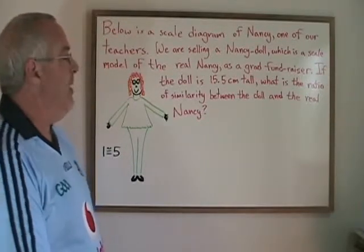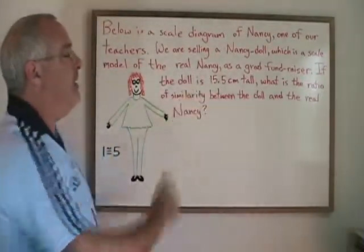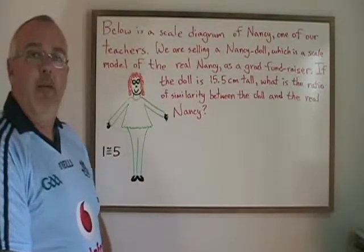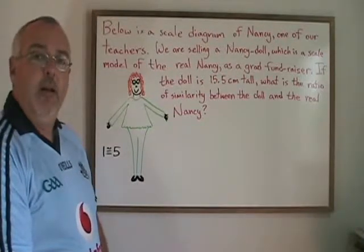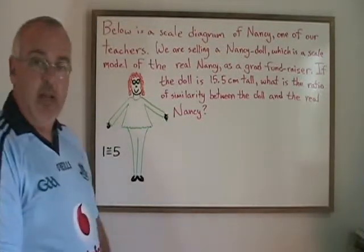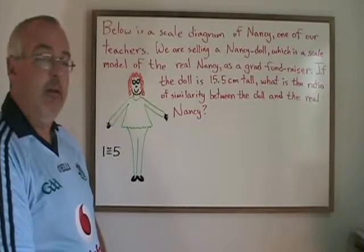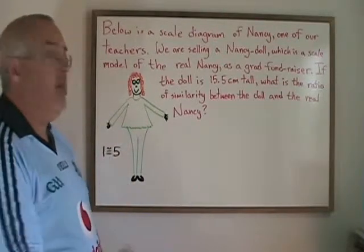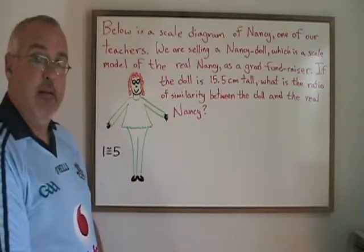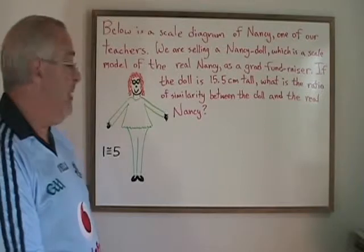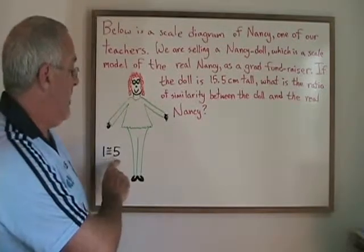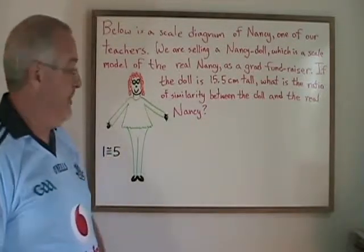We already know the height of the doll. If we could find the height of the real Nancy, all we'd have to do is put those two numbers together and we would find our ratio of similarity. But we don't know the height of the real Nancy, not yet. We can find the height of the real Nancy using this scale diagram and the 1 to 5 scale.